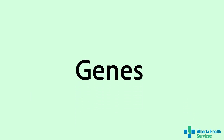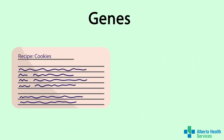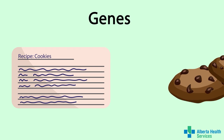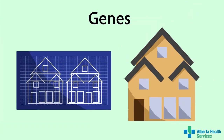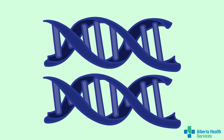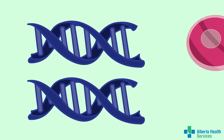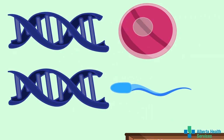So, what are genes? Genes are the instructions that tell your body how to develop and function — like a recipe gives instructions for how to make cookies, or a blueprint gives instructions for how to build a house. You have two copies of almost every gene: one copy comes from the egg, and one copy from the sperm that formed you.